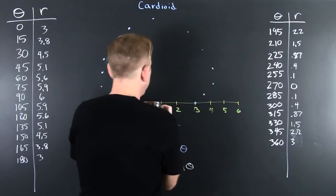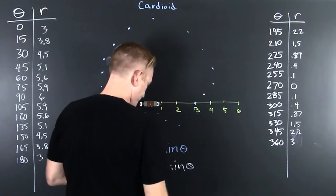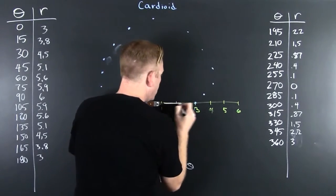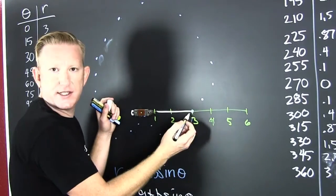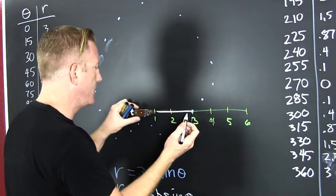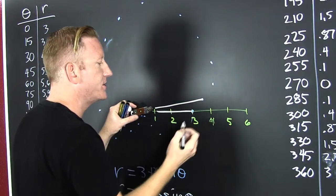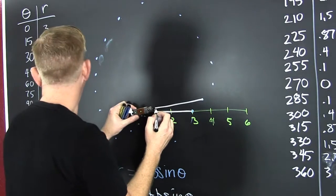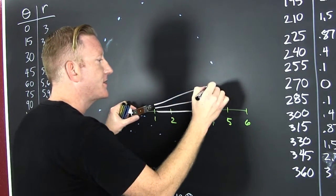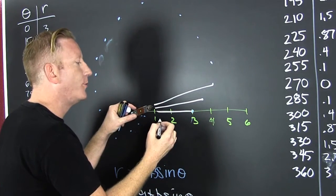When theta is equal to 0, boom, we go out 3 because that's how we calculate that. When it's 15 degrees, we see our function is 3.8. Then at 30 degrees, our function is 4.5.